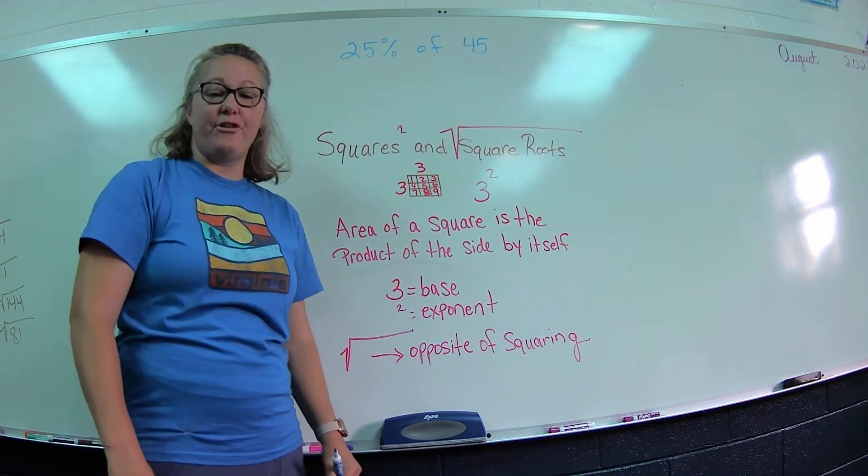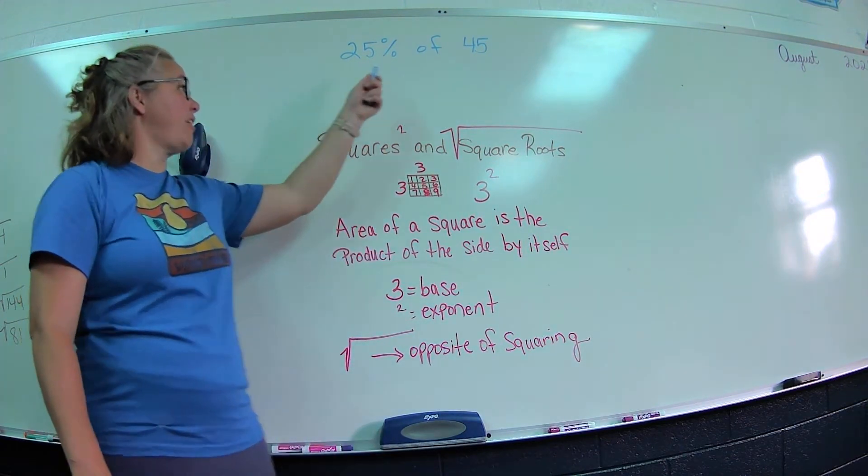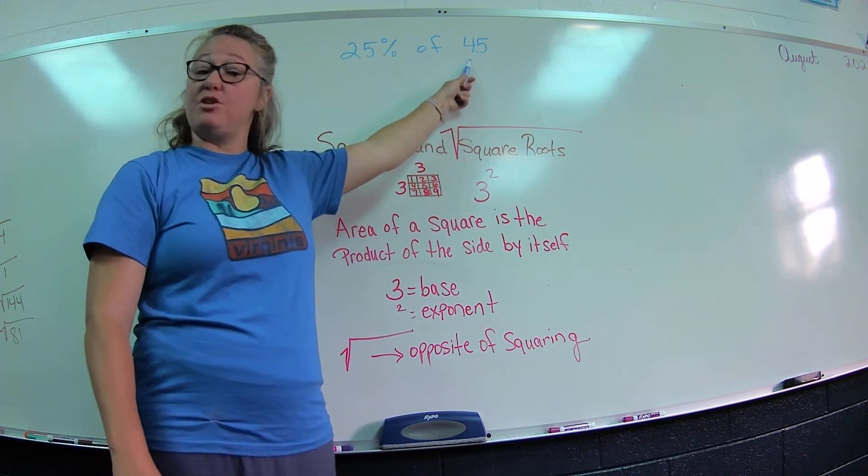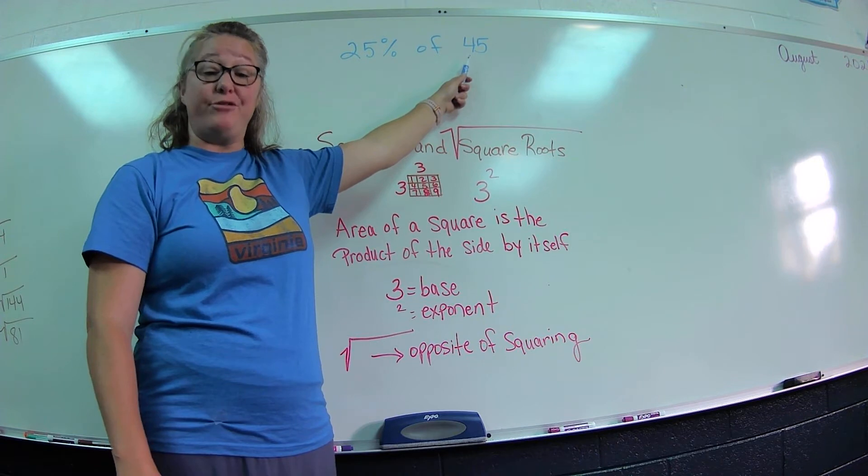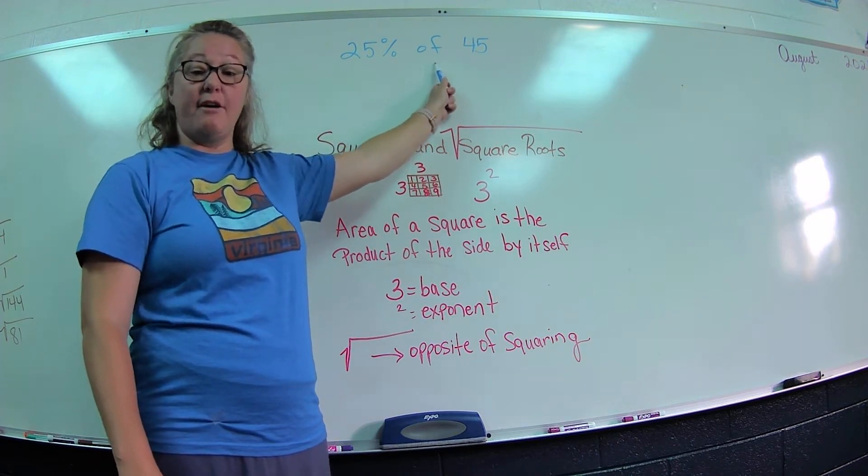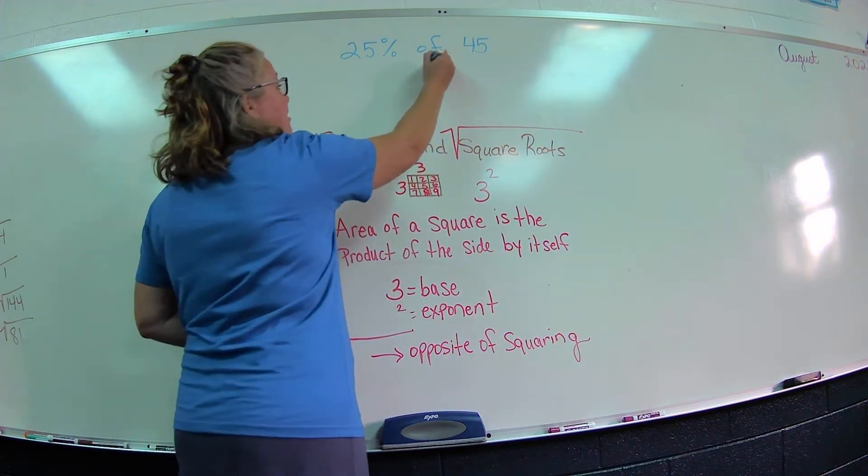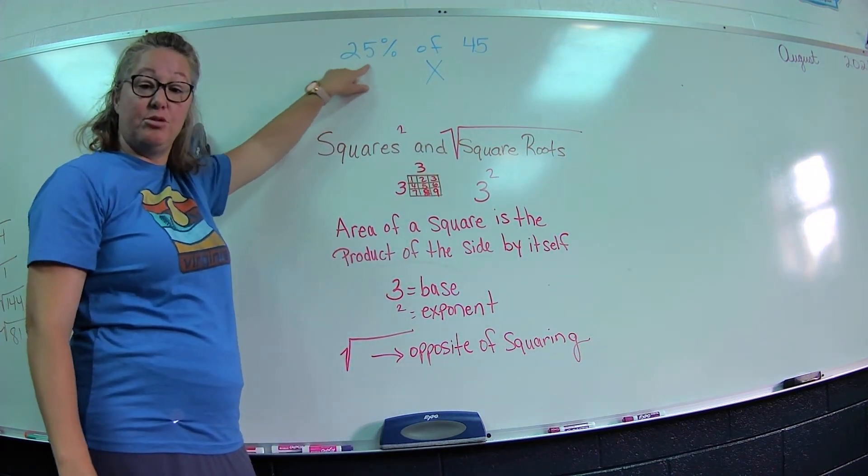Okay, so we're back for another lesson. Today we're going to start with this problem: 25% of 45. We've talked about percentages of a number last time. It's a part or an amount of an object. We remember that 'of' means multiplication, so let's start there. 'Of' is multiplication. Percent to decimal: two places to the left.